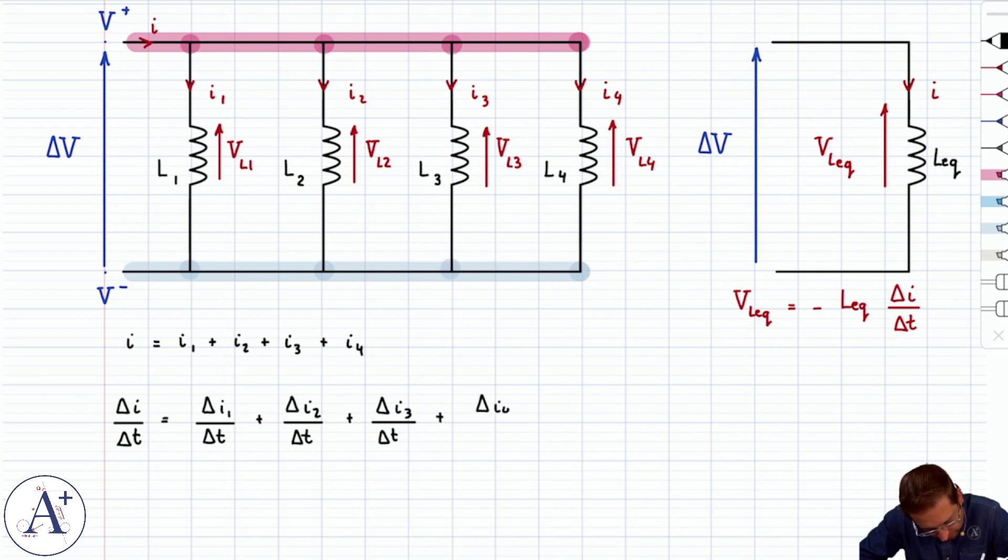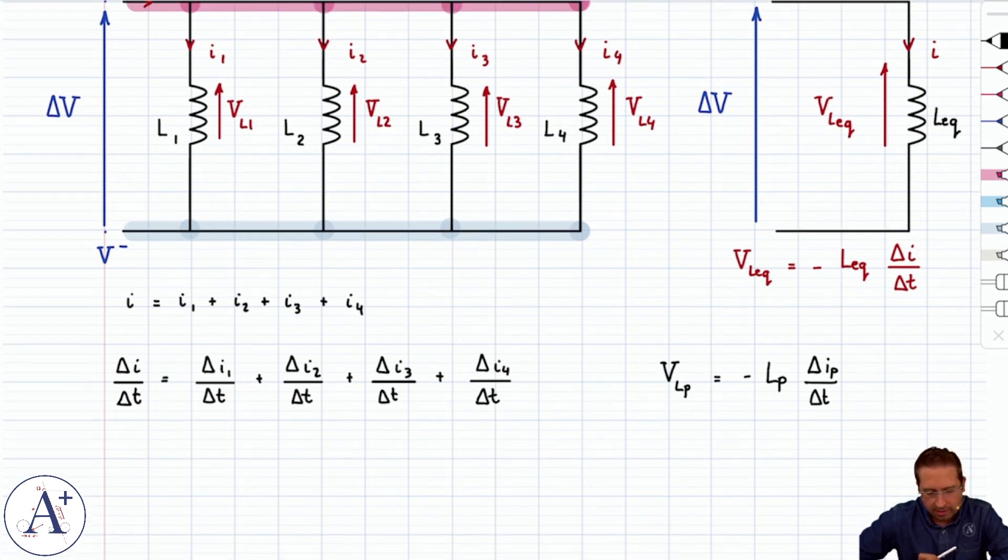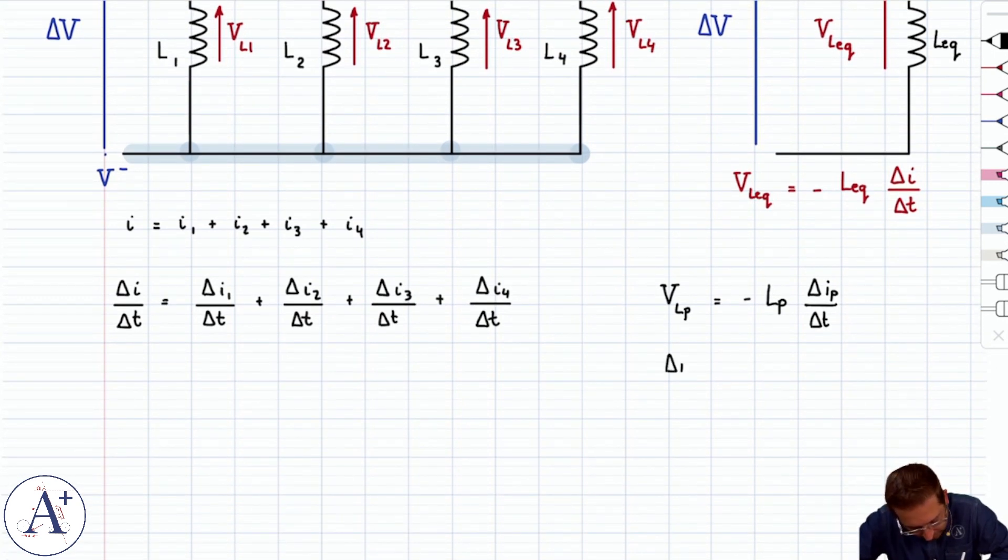And for each inductor, let's remember that VL, call it VL sub P for inductor P, whichever one of the four that is, is minus L sub P delta Ip over delta T. Now that means that we can replace every delta Ip over delta T with minus VLp over Lp. So let's see what that looks like.